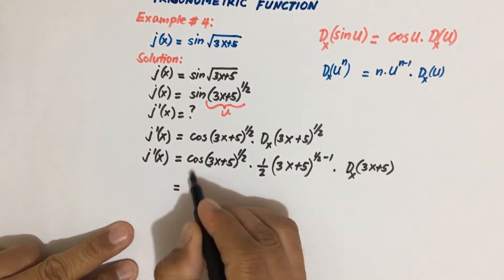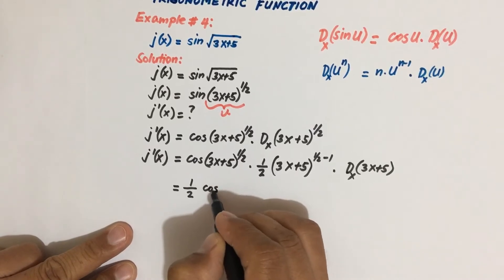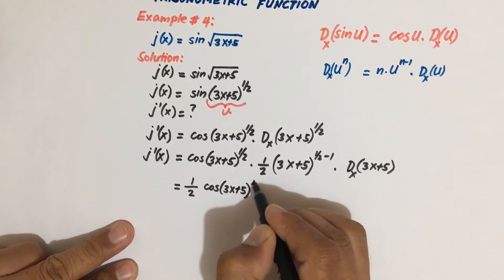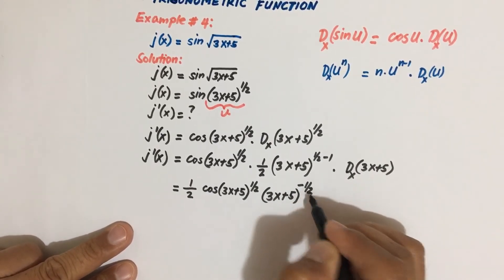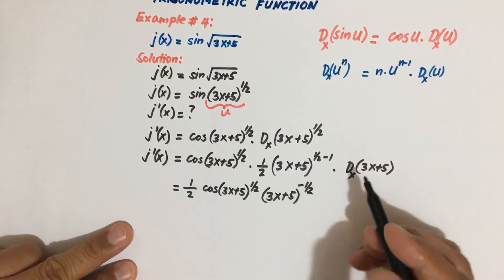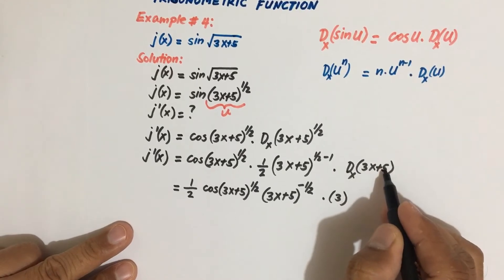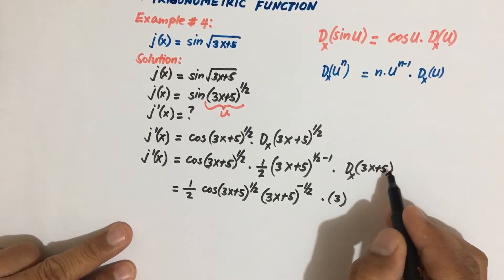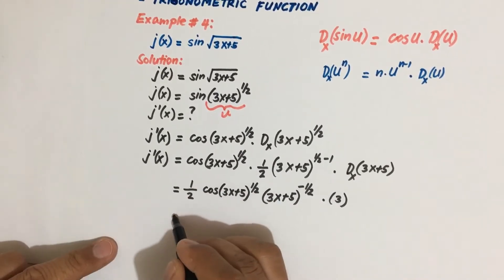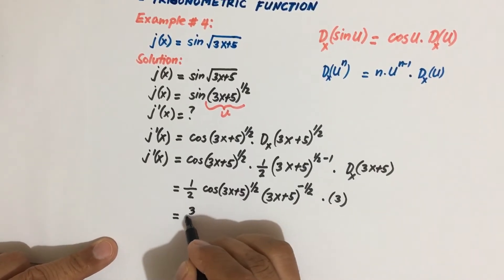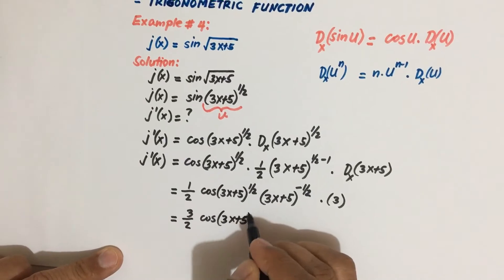Rewriting this, we can write one-half first, then cosine of 3x plus 5 raised to power one-half, times 3x plus 5 raised to power negative one-half — negative because one-half minus 1 is negative one-half. The derivative of 3x plus 5 gives us 3, since the derivative of the constant 5 is zero. So multiplying 3 by one-half gives us 3 over 2, times cosine of 3x plus 5 raised to power one-half.